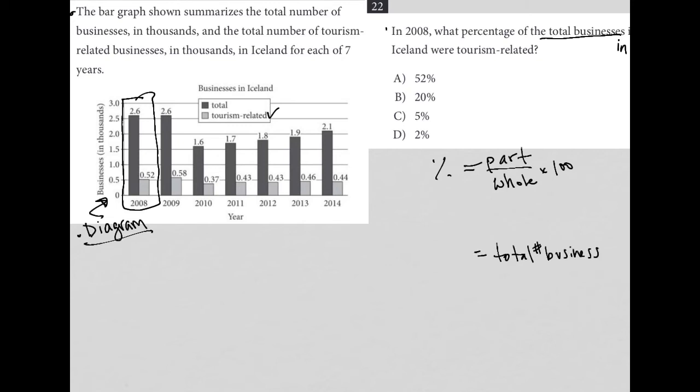We know what that is, and I'll just go right to left. We know that in 2008, the total number of businesses is reflected by this 2.6. We know that 2.6 is actually to be multiplied by 1000, so we get total number of businesses as 2600 for our denominator.